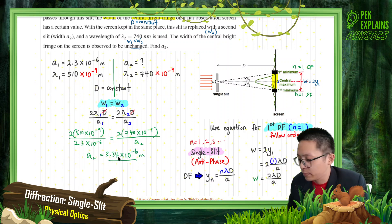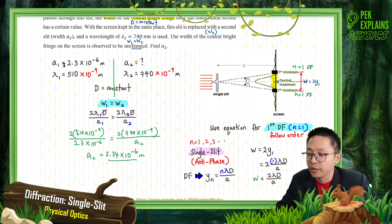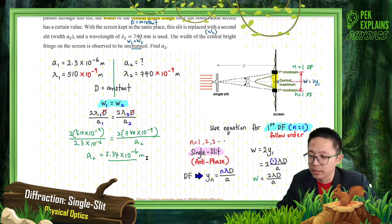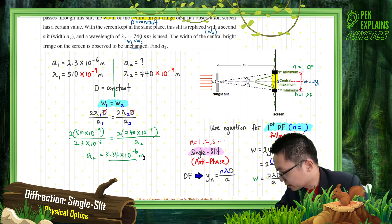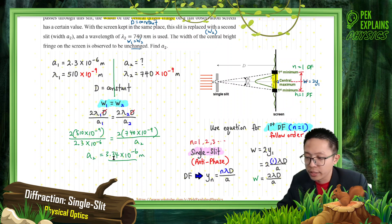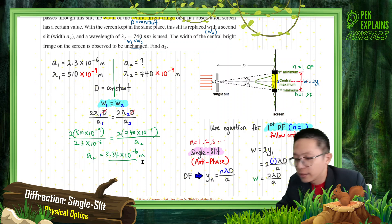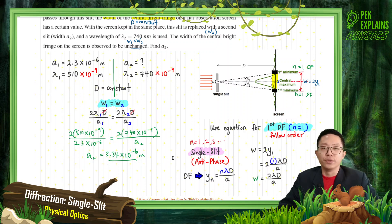That's our answer — the width of the second slit. The first slit has a smaller slit width; the second slit is a bigger slit. If you calculate it correctly, you get A2 = 3.34×10⁻⁶ m. Okay, let's move on to the next video.